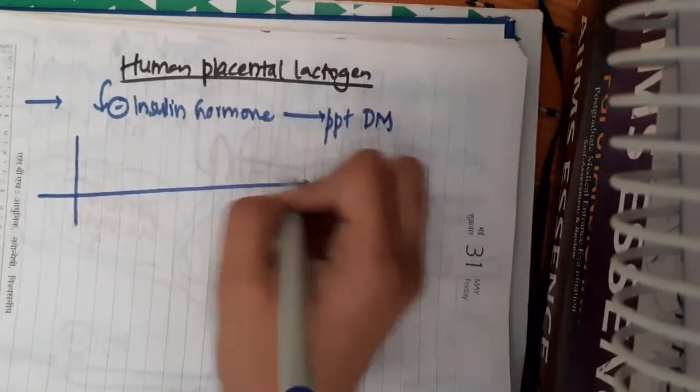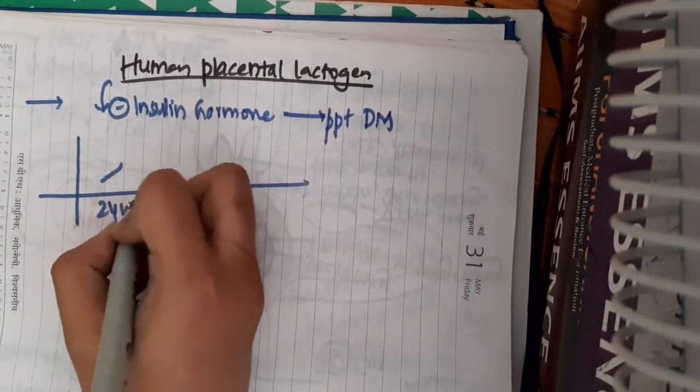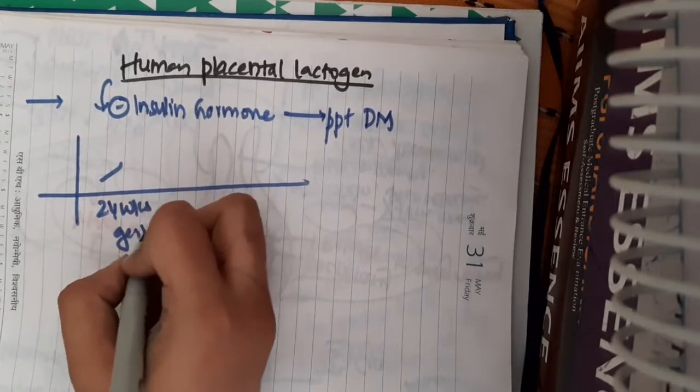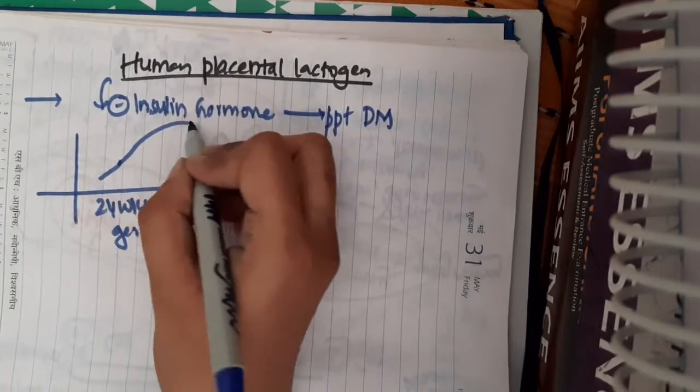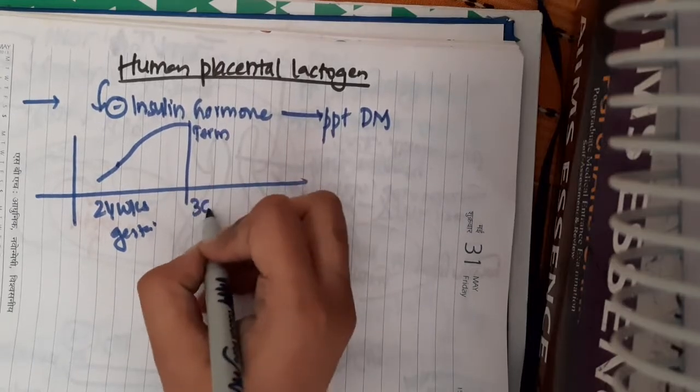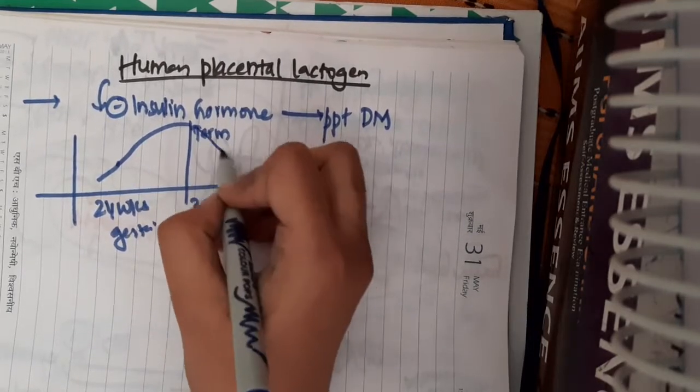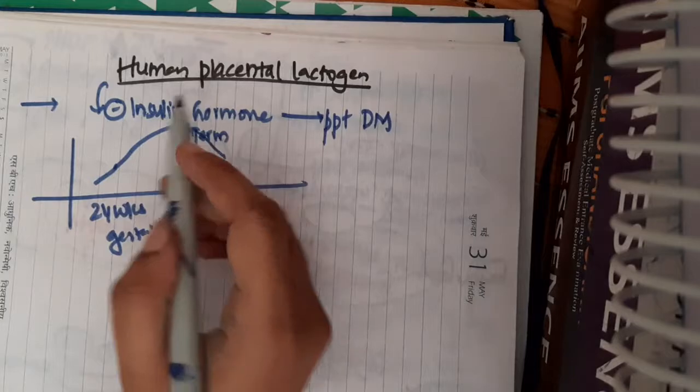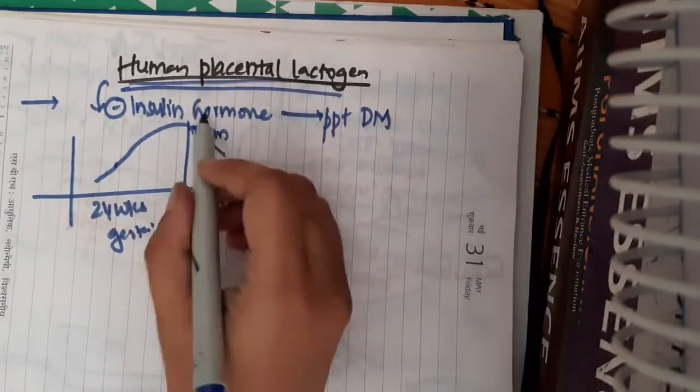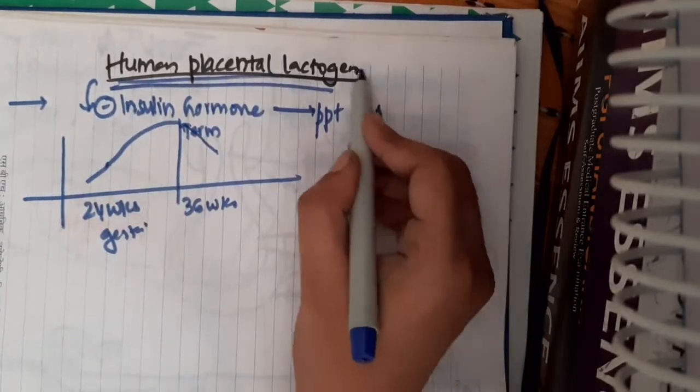This human placental hormone starts secreting at 24 weeks of gestation and it becomes maximum at term. That is, at 36 weeks it peaks and then it decreases.